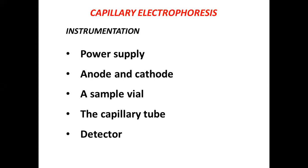In addition to the principle, the instrumental aspects are very important. The components of instrumentation in capillary electrophoresis include: a power supply unit, electrodes functioning as anode and cathode, a sample vial to hold the sample solution for introduction into the capillary tube, the capillary tube itself where separation takes place, and a detector to detect the solutes eluting from the capillary tube.